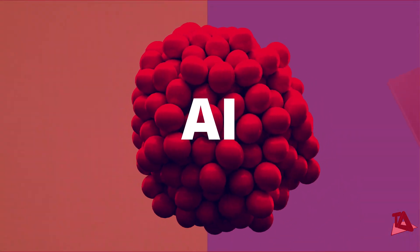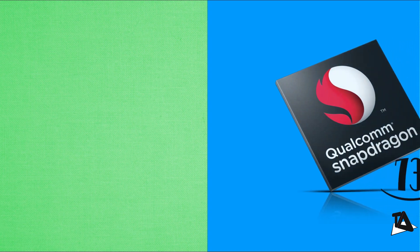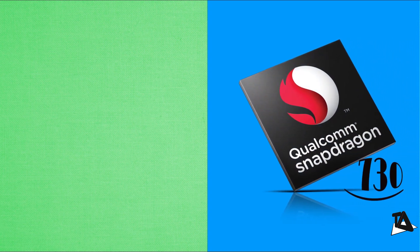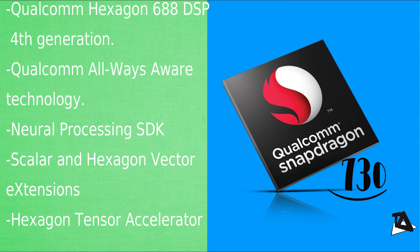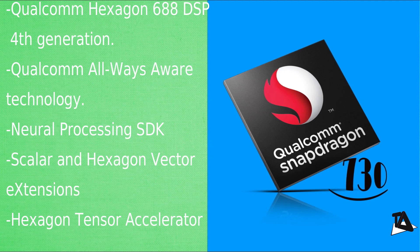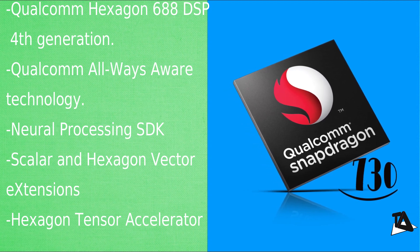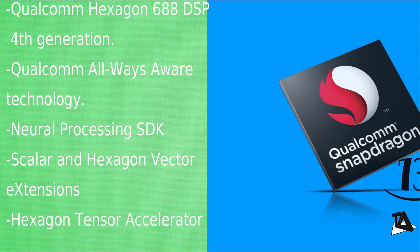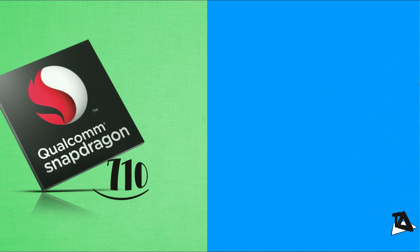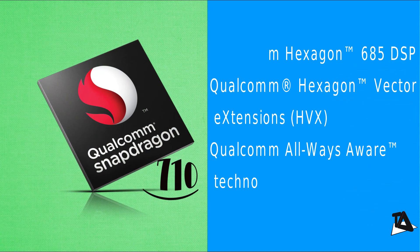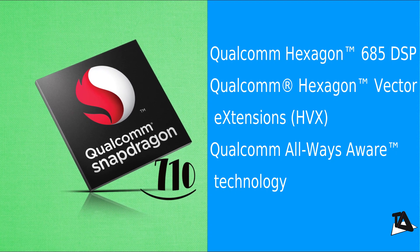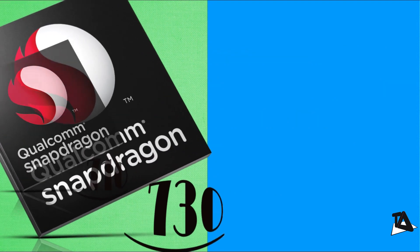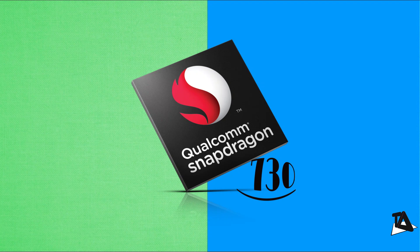AI is where Snapdragon 730 really shines. The Snapdragon 730 and 730G offer 2x faster AI processing, featuring a fourth-generation Qualcomm AI engine that provides on-device interactions for gaming, voice, and security. It works alongside the Hexagon 618 DSP with a Hexagon tensor accelerator for dedicated AI processing. Snapdragon 710 has a third-generation AI engine with a Hexagon 685 DSP, but Snapdragon 730 is by far better in AI performance.